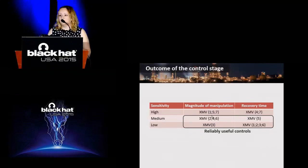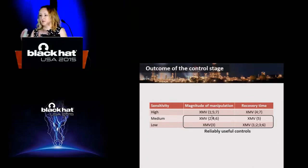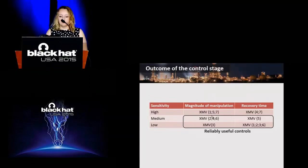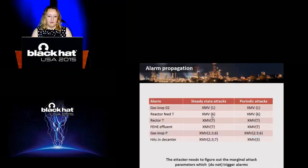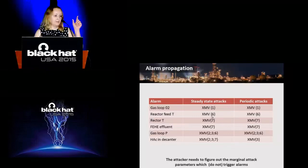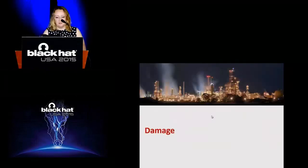In any case, the outcome of the control stage is the attacker's understanding which control loops he can control and to which extent. This XMV stays for manipulated variables, basically control loops: number one, five, seven is a number of control loop. The attacker categorized control loops based on certain useful parameters to him. In our case it was sensitivity to manipulations. We want to understand which controls are reliable for us. We also have to figure out the propagation of alarms. If you want to persist, you don't want to cause any alarms. We have to figure out attack parameters which cause alarms because we did not need to trigger them, basically the marginal attack parameters.